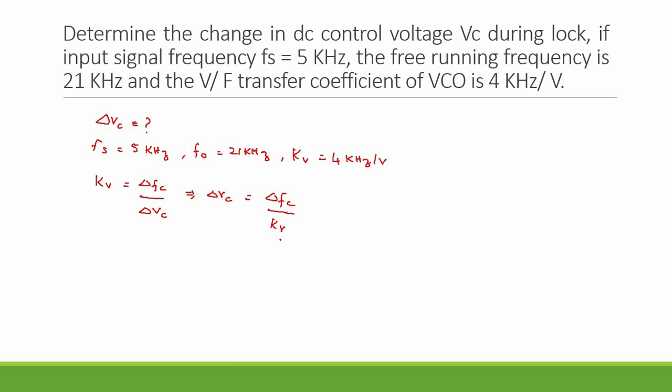In the equation, Kv is directly given to us, del Fc is not given to us. The formula for del Fc is difference in frequency. Difference in frequency is F0 minus Fs. We have to take a modulus term because we do not know which frequency will be higher, divided by Kv.